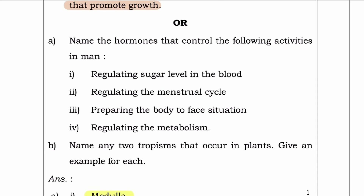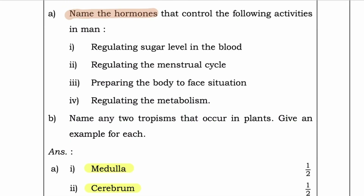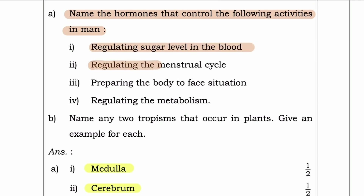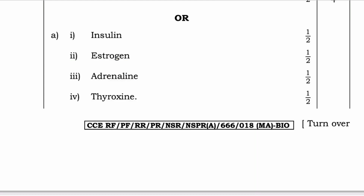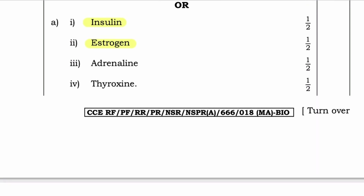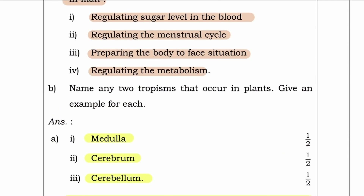There is an optional question: Name the hormones that control the following activities. A: Regulating sugar level in blood — insulin. B: Regulating menstrual cycle — estrogen. C: Preparing the body to face sudden situations — adrenaline. D: Regulating the metabolism — thyroxine.